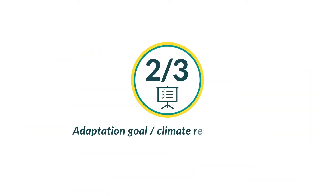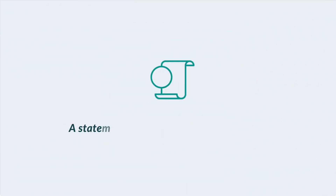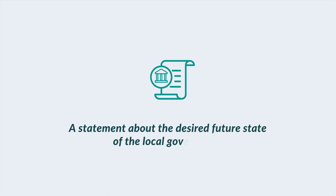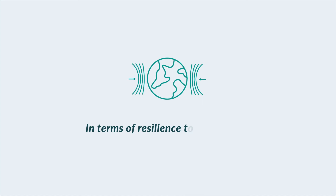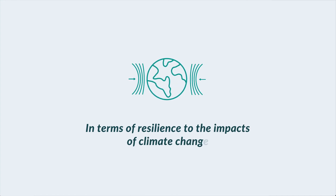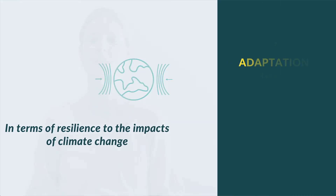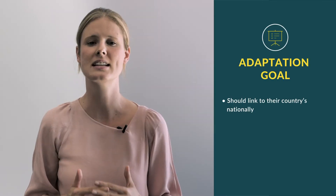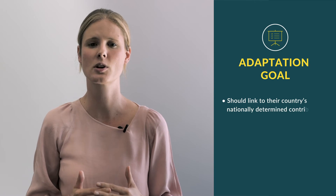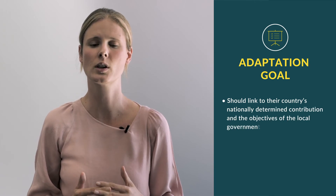The next step is to set an adaptation goal, as well as individual sector goals. The adaptation goal takes the form of a statement about the desired future state of the local government in terms of resilience to the impacts of climate change. This goal should link to their country's nationally determined contribution and the objectives of the local government.